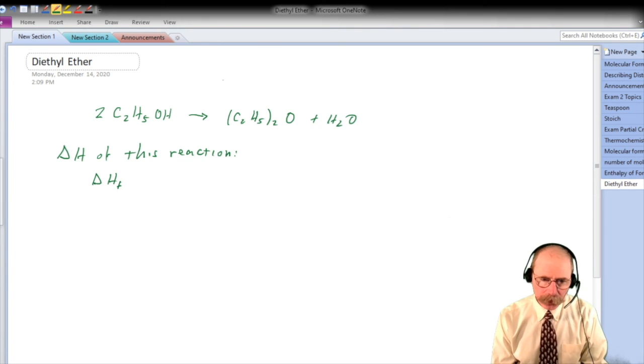I'm just going to number these species, the ethanol, the diethyl ether, and the water, 1, 2, and 3, so that we know what I'm talking about.